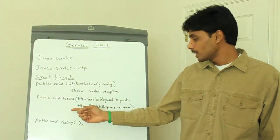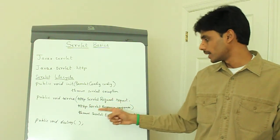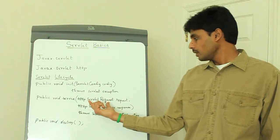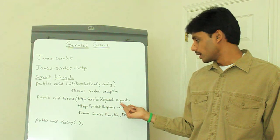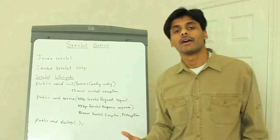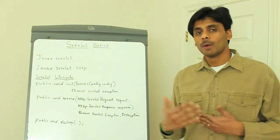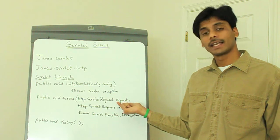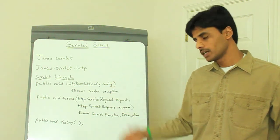Moving on to the service method — it has two parameters: the HttpServletRequest and the HttpServletResponse. Using the HttpServletRequest object, you can retrieve all the HTTP request parameters. Going back to the banking application, you can retrieve the username and password by calling request.getParameter("username") and request.getParameter("password").